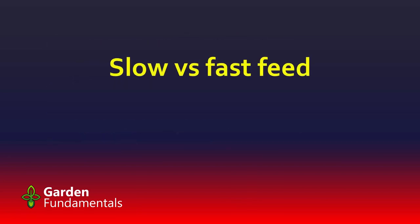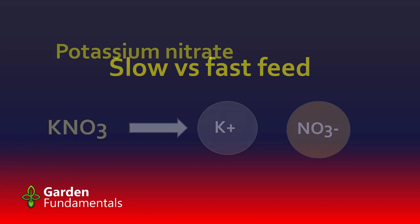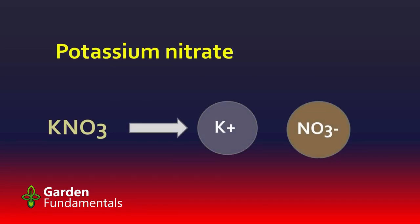Let's talk about slow and fast feed. On this slide I'm showing potassium nitrate, which is one of the main components of a lot of synthetic fertilizer. Its chemical formula is KNO3. When it meets water, it separates into two separate molecules — one is potassium and the other is a nitrate. This happens with almost all synthetic fertilizer: they very quickly turn into the nutrients that are available for plants, so both that potassium and nitrate are now in the soil water and can move around.